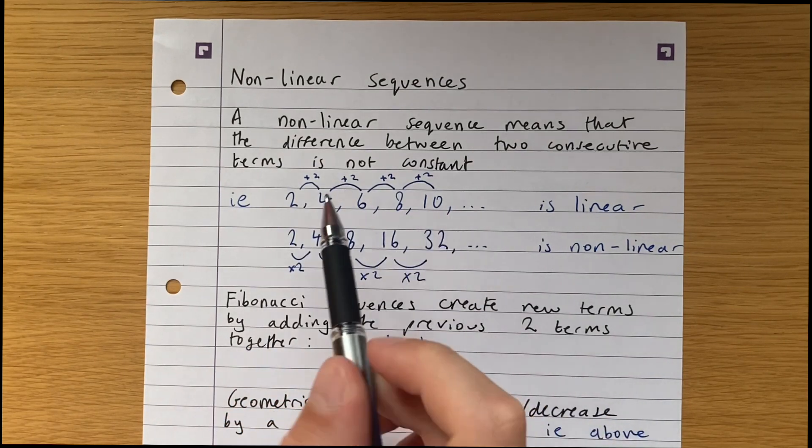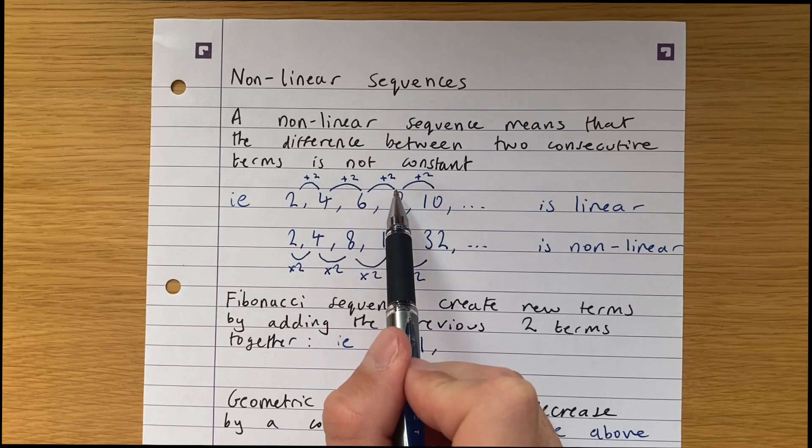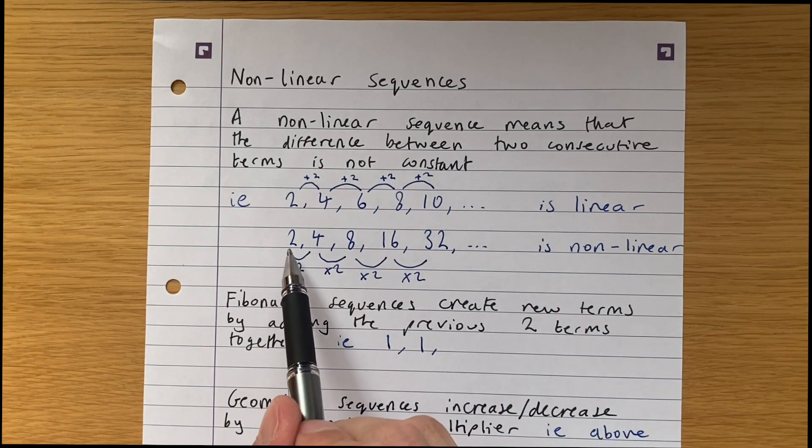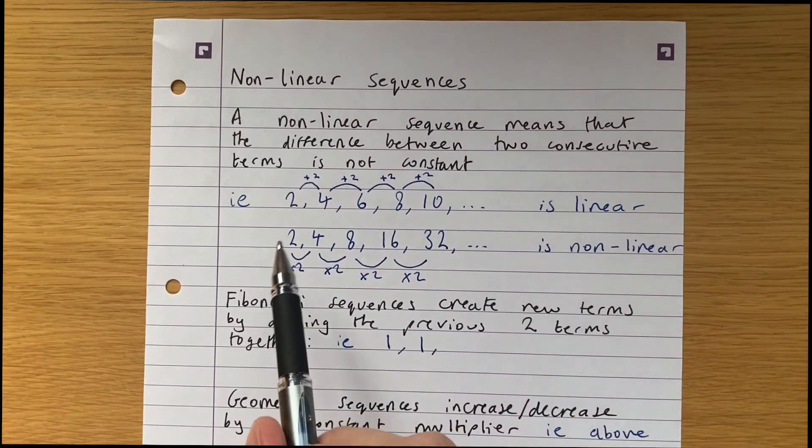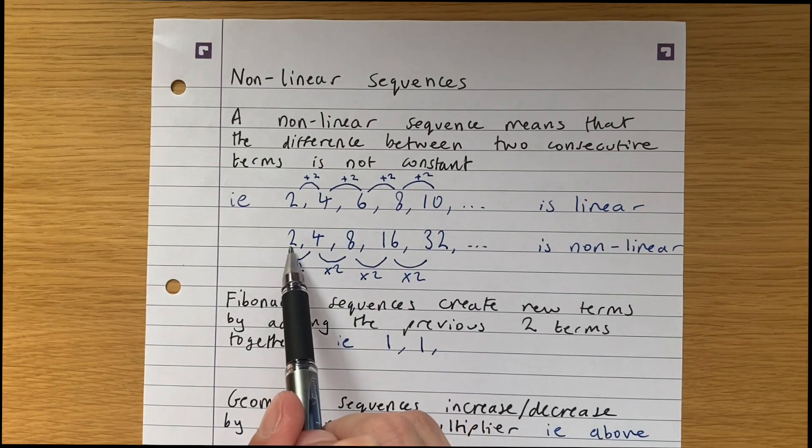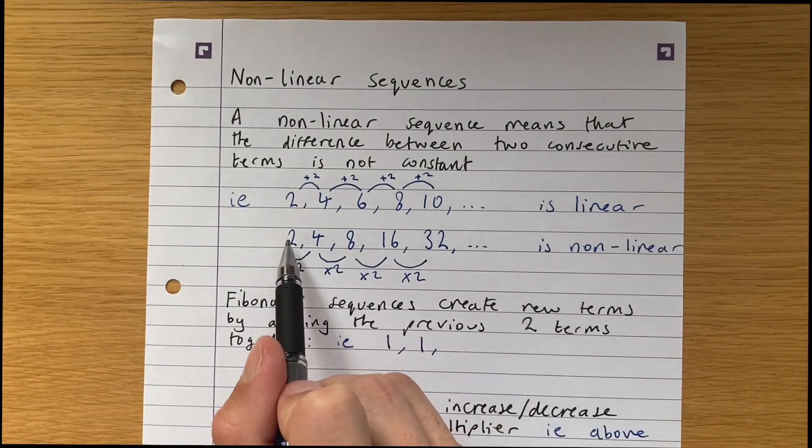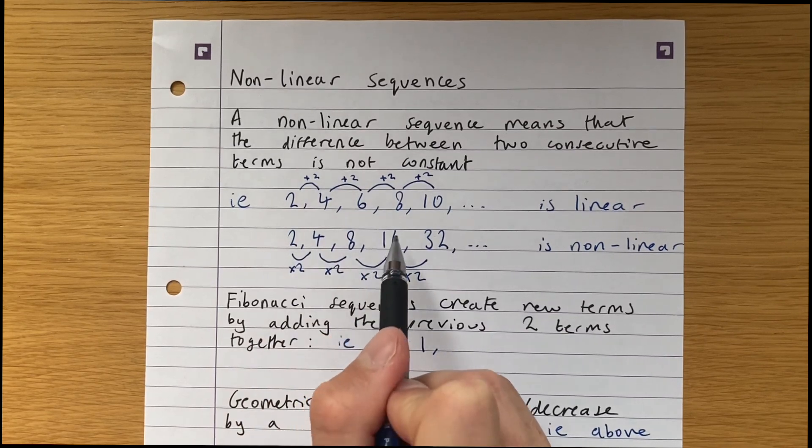2, 4, 6, 8, 10 is linear because the difference between each term is just 2. But the sequence 2, 4, 8, 16, 32 is nonlinear because here we're multiplying each term by 2. The difference between them is not constant. The difference here is 2, then 4, then 8, then 16.